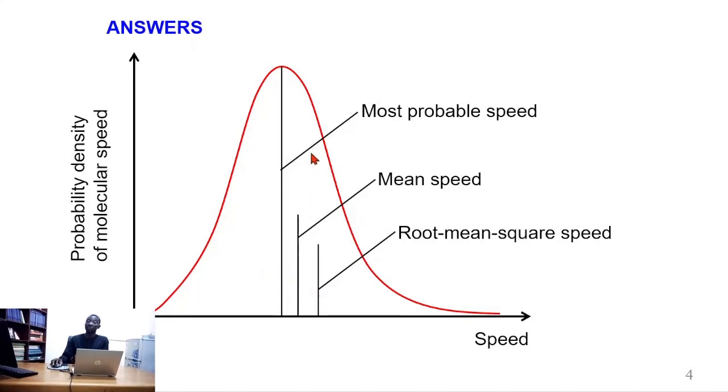The root mean square speed, which represents the square root of the sum of the squares of all the speeds of the molecules divided by the number of the molecules, will lie just after the mean speed. Therefore, the most probable speed is less than the mean speed, and the mean speed is less than the root mean square speed.